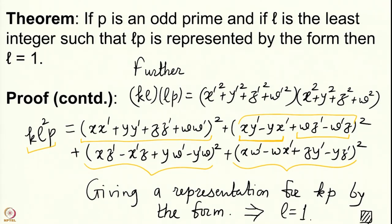What we have proved is that the form is multiplicative, 2 is represented by the form, and every odd prime is represented by the form. Getting Lagrange's theorem from this is very easy; we will see it at the start of our next lecture. Thank you very much.